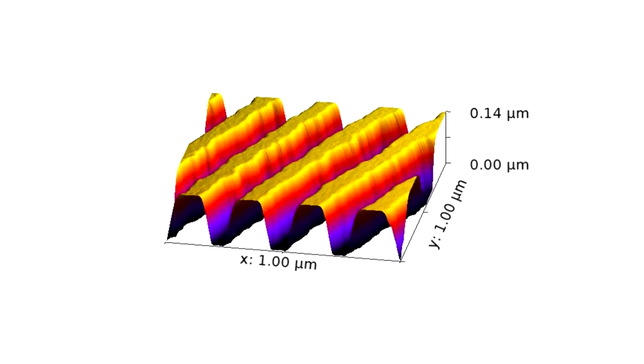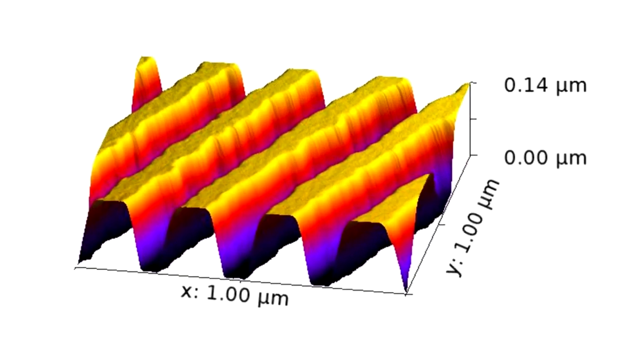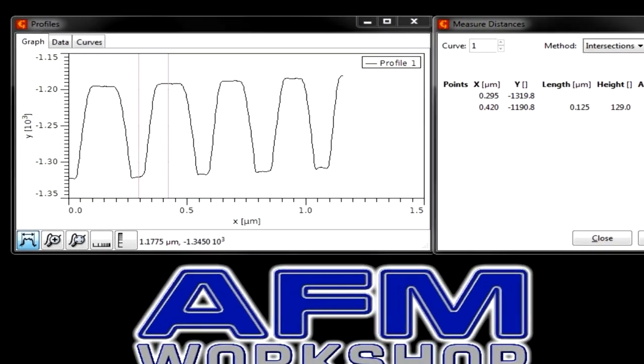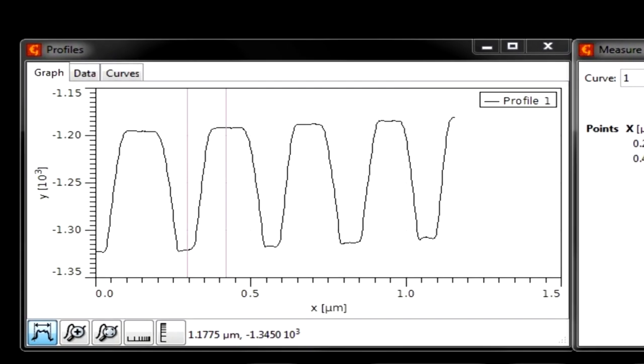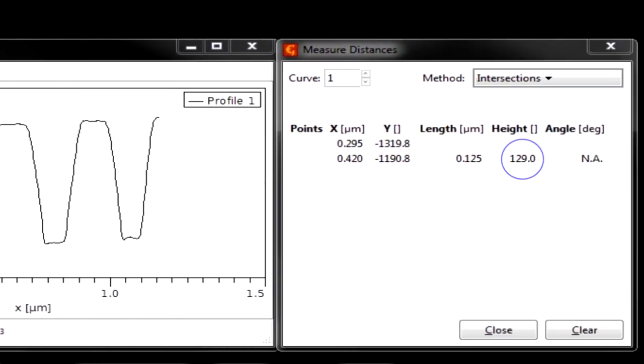A common industrial application for the TT2 AFM is measuring the dimensions of gratings. We are able to easily measure the height as well as the pitch as shown here.